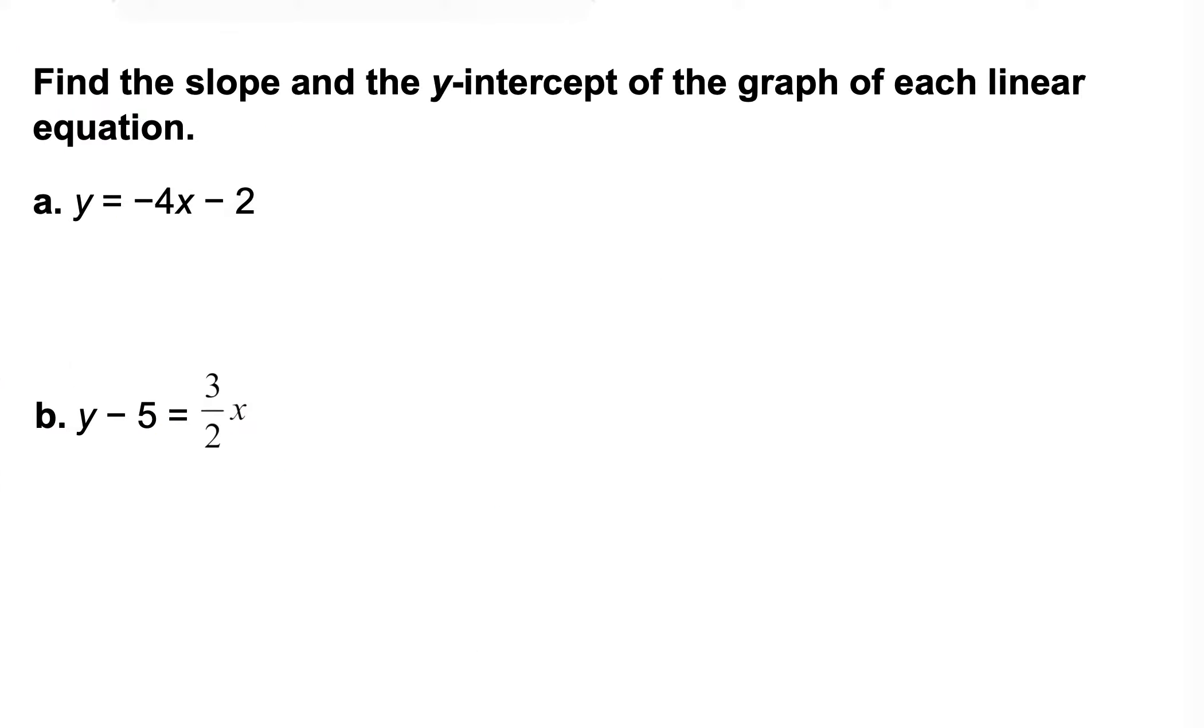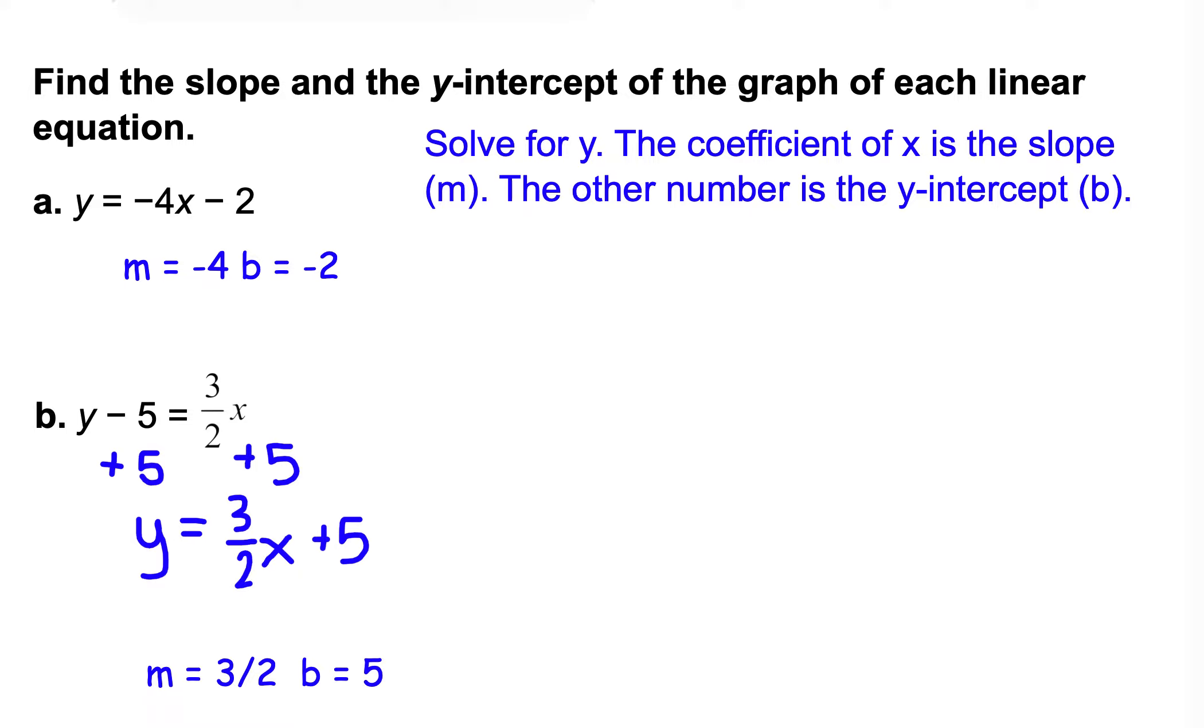Let's take a look at our first problem. It says find the slope and the y-intercept of the graph in each linear equation. If something's already in slope-intercept form, you don't have to do any calculations. You should be able to look at it and just know what the slope and y-intercept is. If it's not solved for y, such as b, y minus 5 equals 3 halves x, then you have to solve for y before you know the slope and y-intercept.